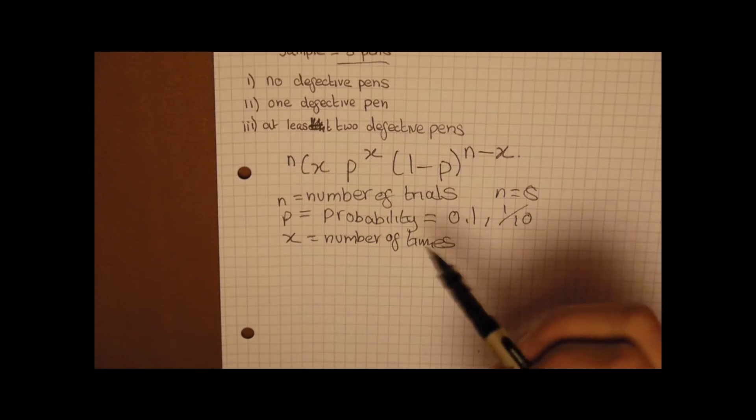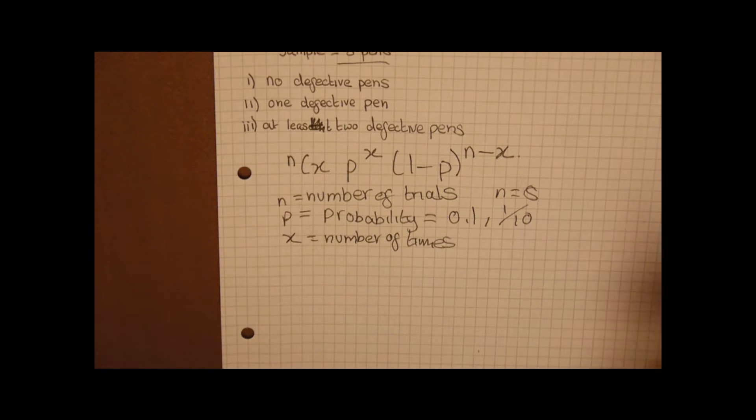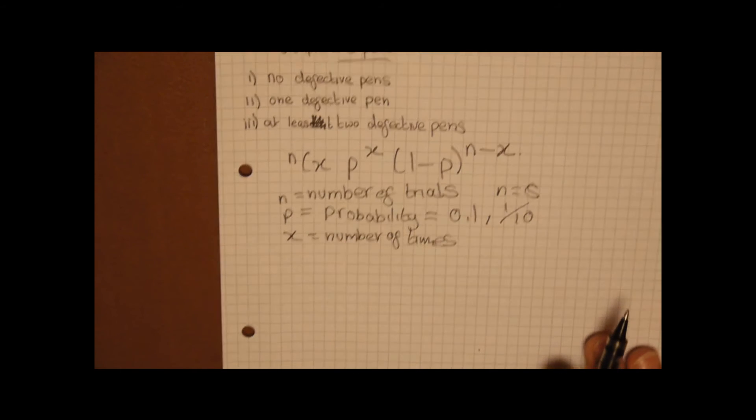So just to repeat, the formula is nCx times p to the x times 1 minus p to the power of n minus x. So we'll start with question one: no defective pens.